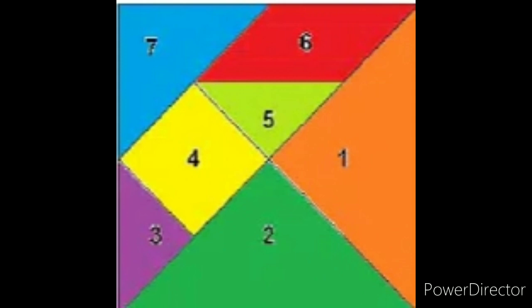Tans. Cut square paper into 7 pieces — those 7 pieces are called tans. One square is divided into 7 pieces. By using these tans, make pictures. By joining these 7 pieces, make pictures. That is Tangram Gaming.